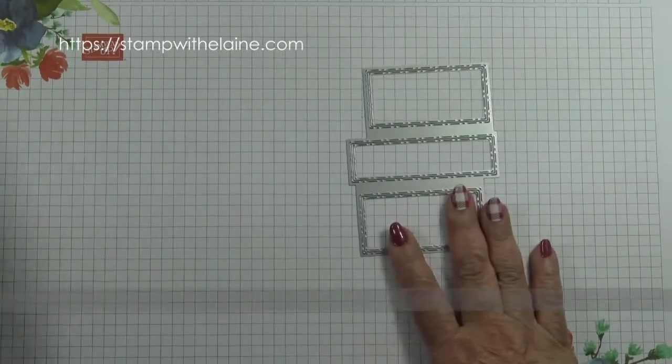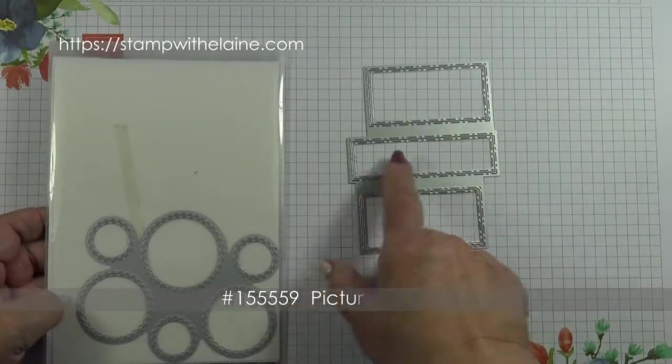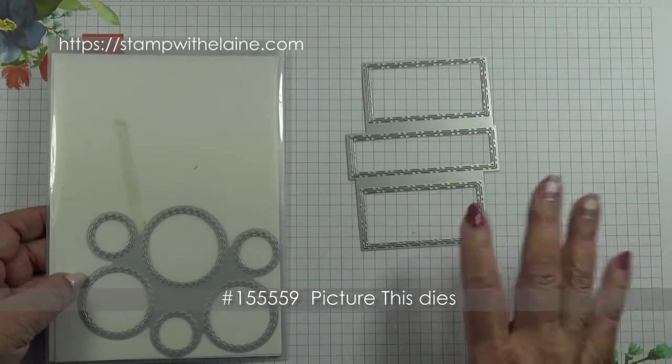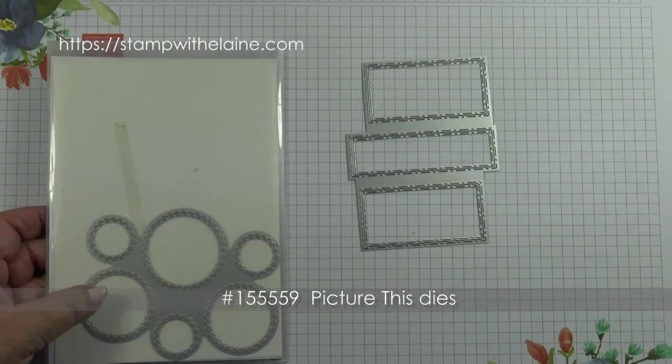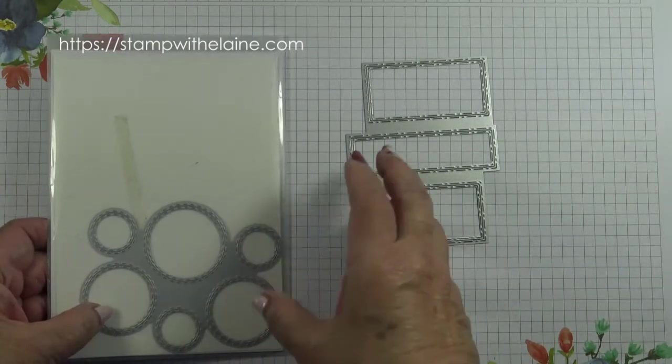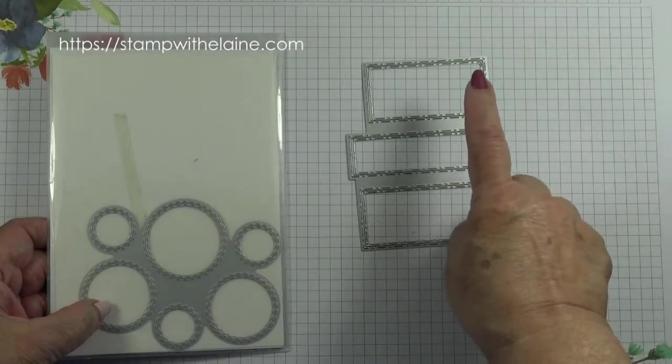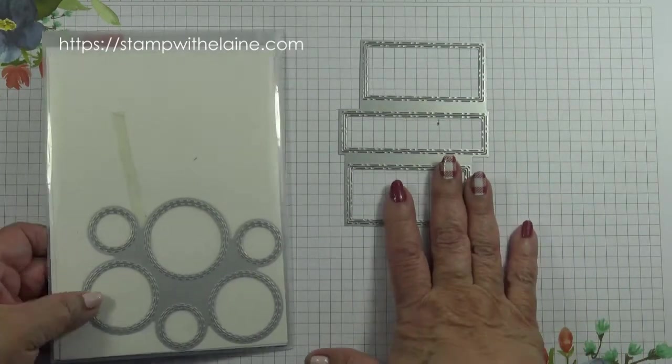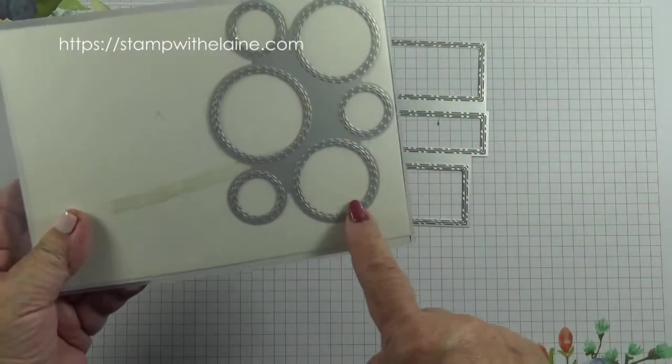Also the picture this dies, there are two dies in this set. They're standalone so you can use it with any stamp set in the current catalogues. I'm using the one with the rectangles but there's also one with circles.